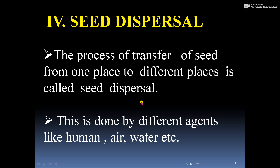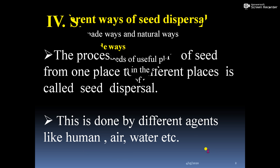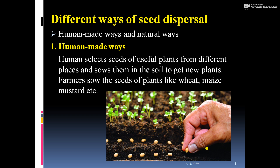It means the seeds scatter from one plant to another plant. This is done by different agents like humans, air, water, etc. You need to know in detail how the different kinds of seed dispersal help in sowing the seed. Let's look at the different ways of seed dispersal.